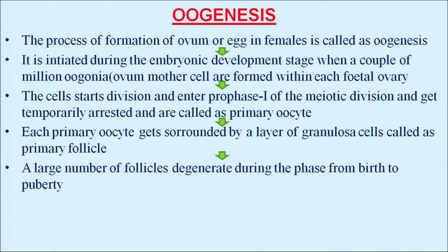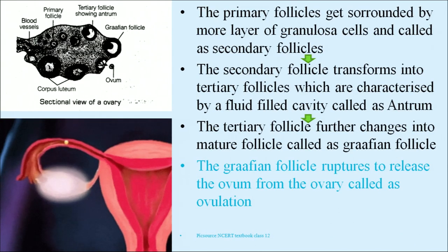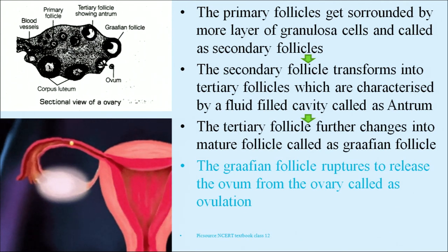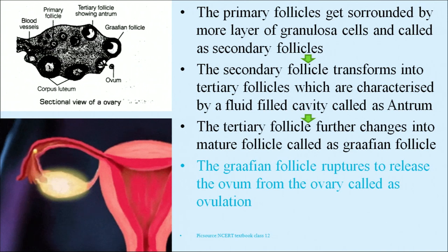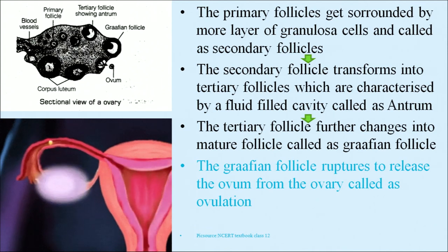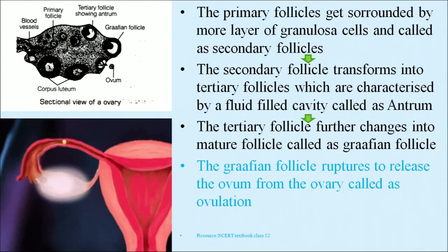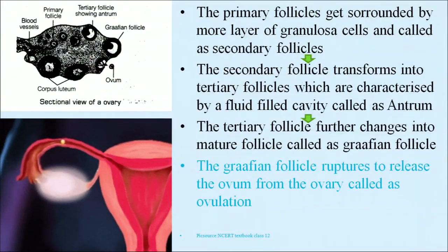A large number of follicles degenerate during the phase from birth to puberty. The primary follicles get surrounded by more layers of granulosa cells and are called secondary follicles. Secondary follicles transform into tertiary follicles, characterized by a fluid-filled cavity called the antrum. The tertiary follicle further changes into a mature follicle called the Graafian follicle. The Graafian follicle ruptures to release the ovum from the ovary, a process called ovulation.